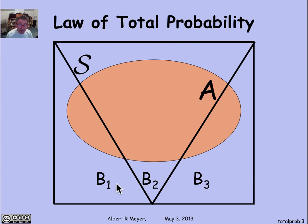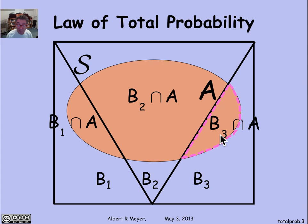Now, of course, these three sets that cut up the whole space willy-nilly cut up the set A into three pieces. The first piece is the points in A that are in B1. The second piece is the points in A that are in B2. And the third is the points in A that are in B3.